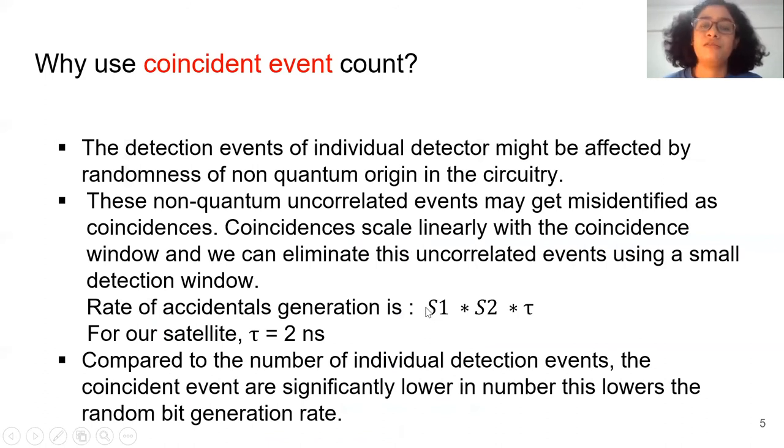One question may arise: why don't we just use a detector and laser directly to generate this Poissonian randomness? The reason is that detection events of individual detectors may be affected by randomness of non-quantum origin. These non-quantum uncorrelated events may get misidentified as coincidences. We want to eliminate these uncorrelated events, also called accidentals, and for that we need to narrow down the coincidence window. Coincidences scale linearly with the coincidence window.